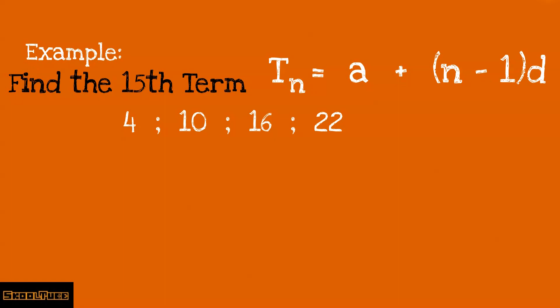The first thing to do is to find the lowest common difference between these terms. The difference between 4 and 10 is 6, the difference between 10 and 16 is also 6, and the difference between 16 and 22 is 6. So 6 is our lowest common difference. Now let's work with the general term.